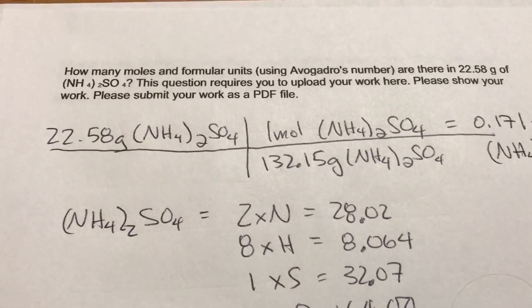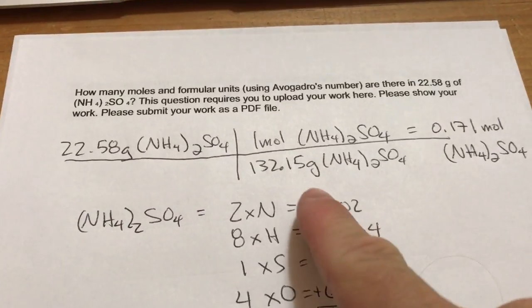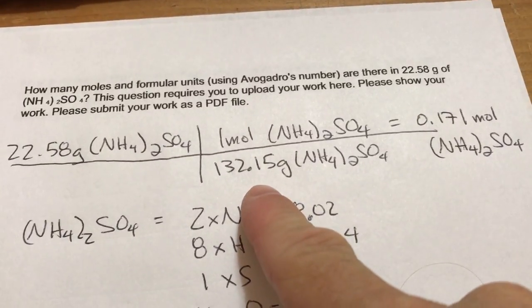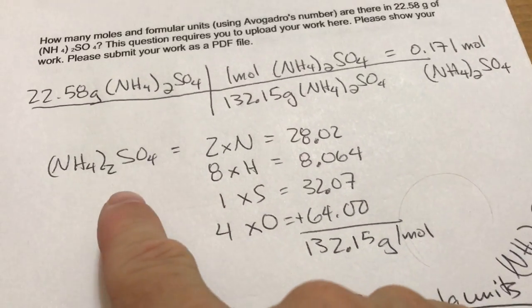Now, in 22.58 grams, that's going to be our starting point. I figured out the molar mass of ammonium sulfate by counting up the fact that in ammonium sulfate there are two nitrogens,